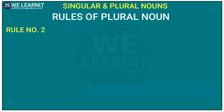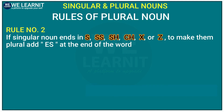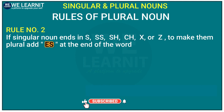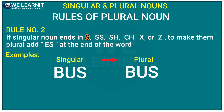Now, let's move to the second rule of plural nouns. If the singular noun ends in -s, -ss, -sh, -ch, -x, or -z, then to make them plural, we just need to add -es at the end of that word. For example, 'bus' ends with the letter -s. As per the second rule, when a singular noun ends with -s, we need to add -es to make it plural. So we add -es to make it plural.